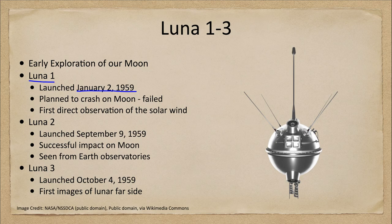We can't detect the solar wind here on Earth — we can see its effects in the aurora, but you can't detect it directly because our magnetic field buffers all of those particles away. So with Luna 1, we could get the first measurements of the intensity of that solar wind.